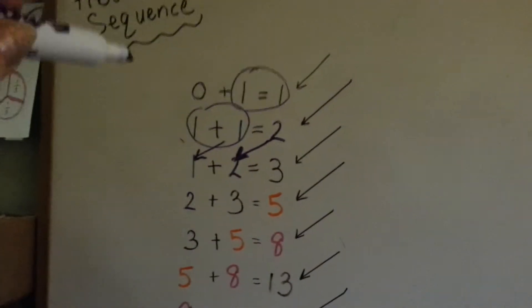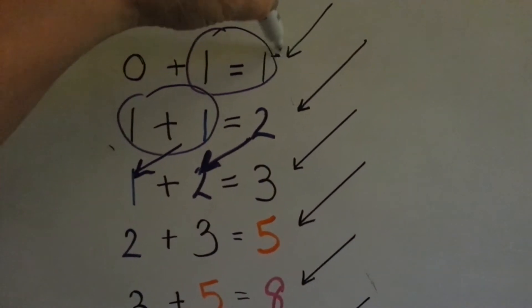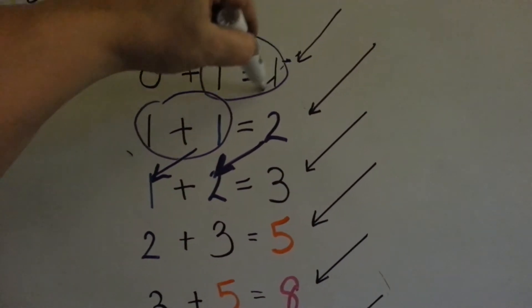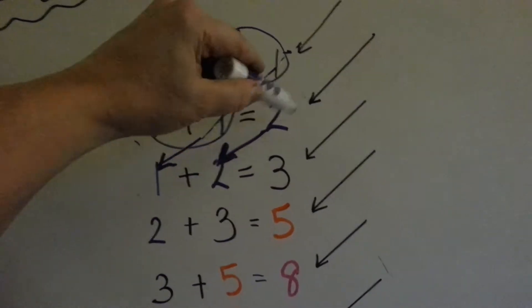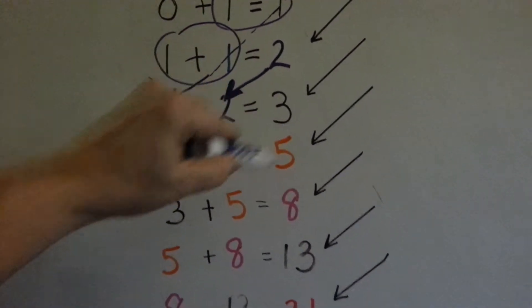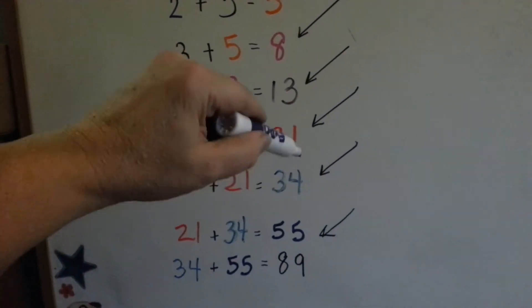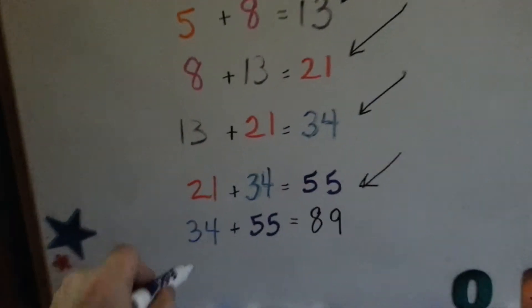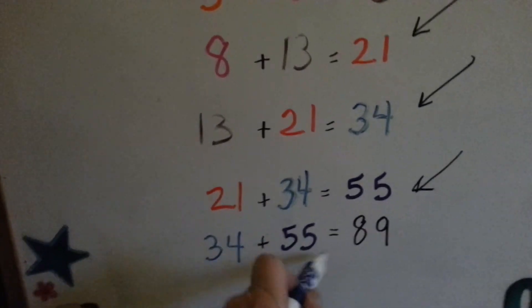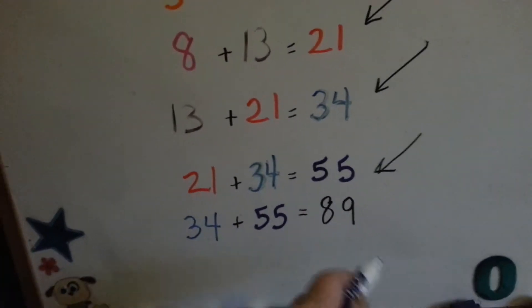If you look at the pattern, going down this way with this arrow, it's all 1s, then 2s, then 3s, then 5s, then 8s, then 13s, then 21s, then 34s. So down here, we would put 55 plus 89 and get the next row.